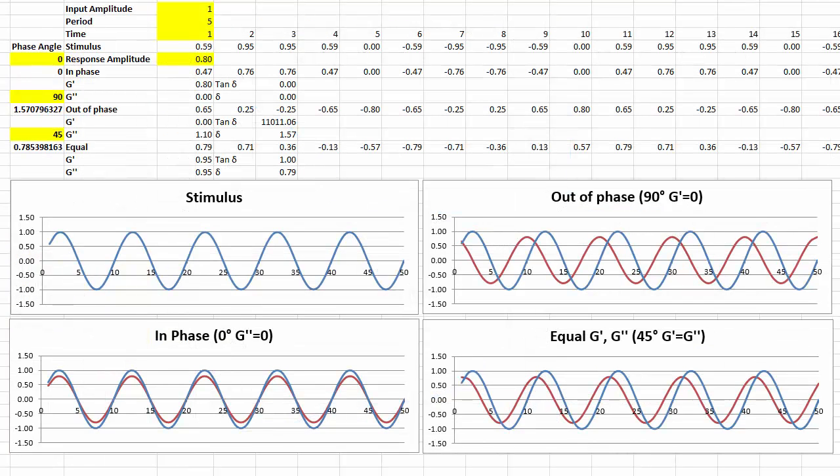Finally there's the scary stuff about G prime and G double prime but actually it's not that scary and it's discussed also in one of the apps on the practical adhesion website. We have a stimulus. If it's purely elastic then the response in red here is entirely in phase. If it's purely viscous then the response is 90 degrees out of phase and if it's a mixture, in this case it's a 50-50 mixture so it's 45 degrees, then you get that slight lag. By playing around with these parameters hopefully you like me will lose your fear of G prime, G double prime, and Tandelta.